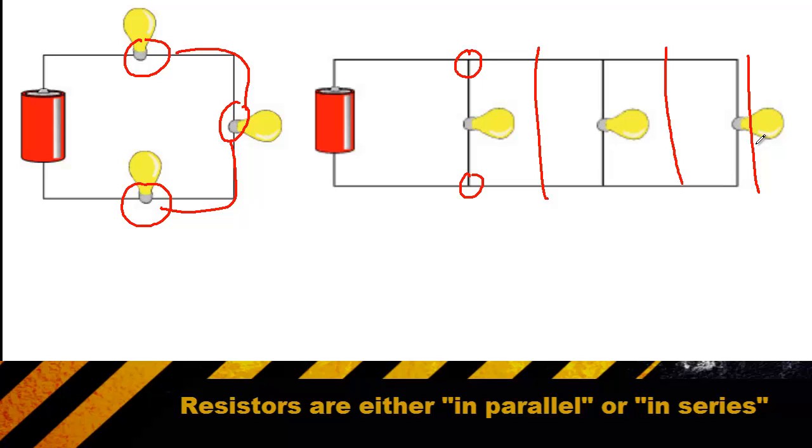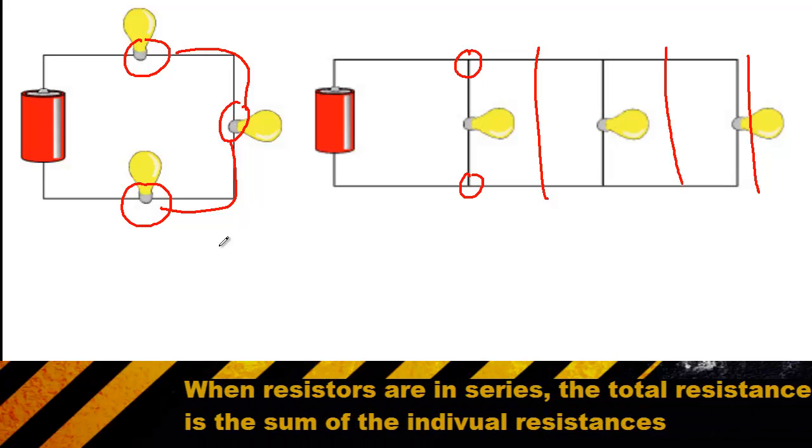Your first job when you look at a circuit is to find the total resistance for all the resistors combined. To find the total resistance in a series circuit, you simply add up the resistance you get from each light bulb or resistor.